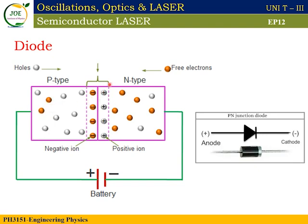In N-type semiconductor, there are electrons. In N-type semiconductor, majority carriers are electrons. Minority carriers are holes — very few holes.